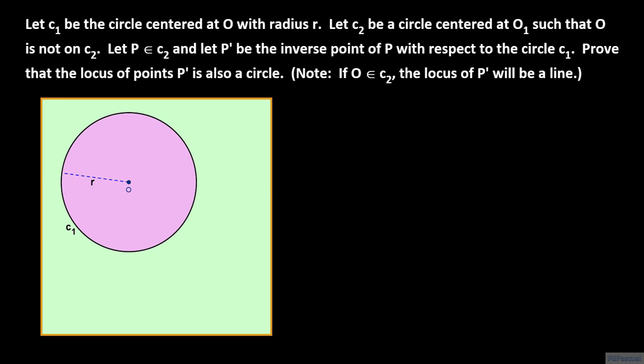In this lecture, we take a look at inversions of circles with respect to another circle. We start with circle C1 centered at O and with radius R. Then we take another circle C sub 2 centered at O1. For each point P on C sub 2, we find its inverse with respect to C sub 1. We call this inverse point P prime.